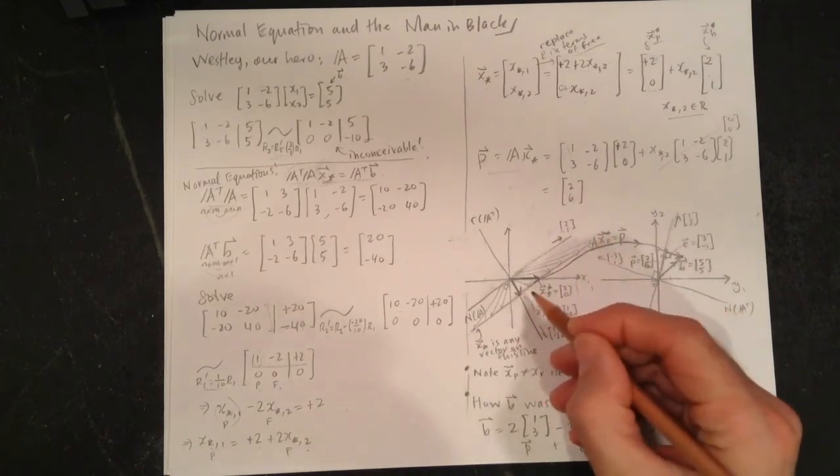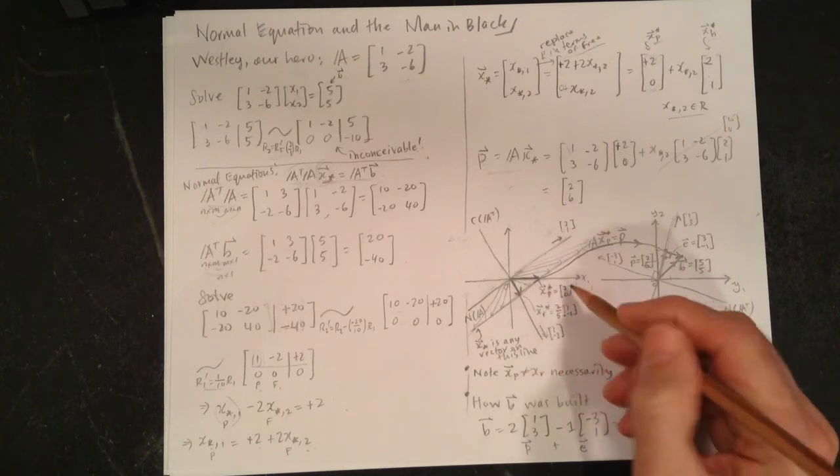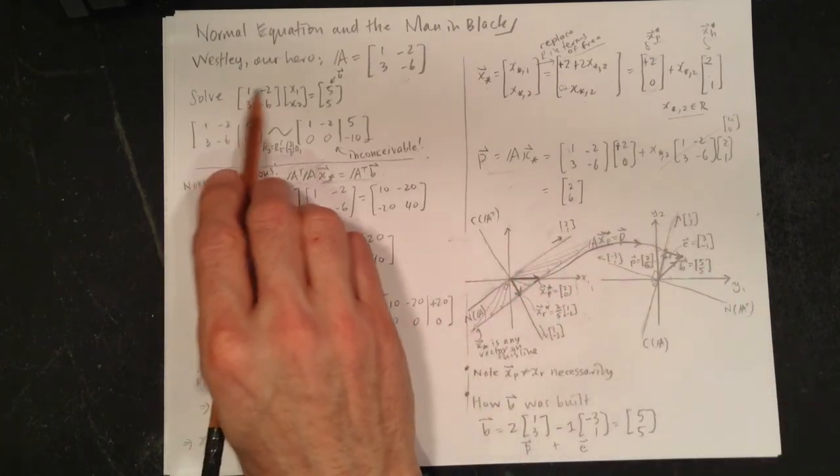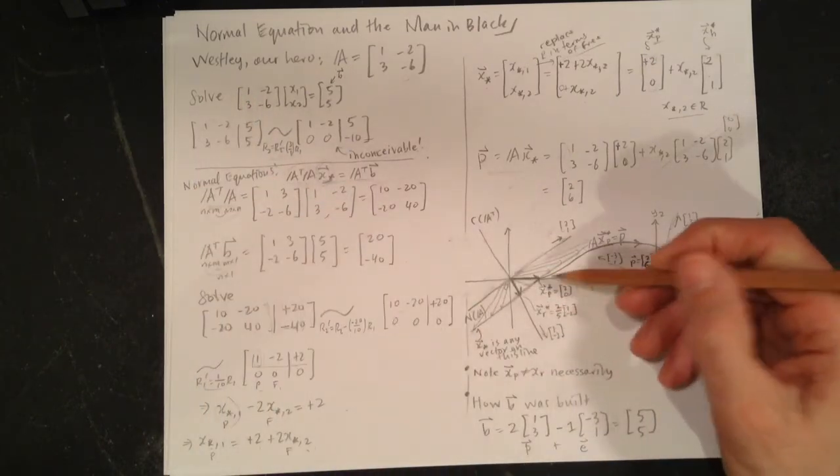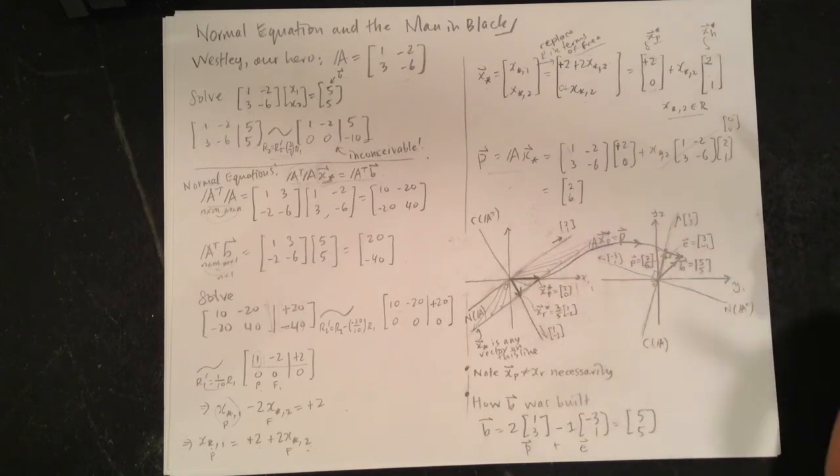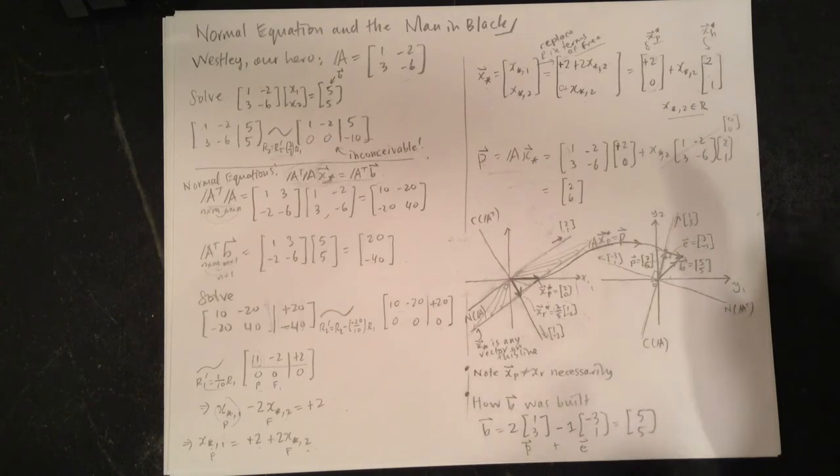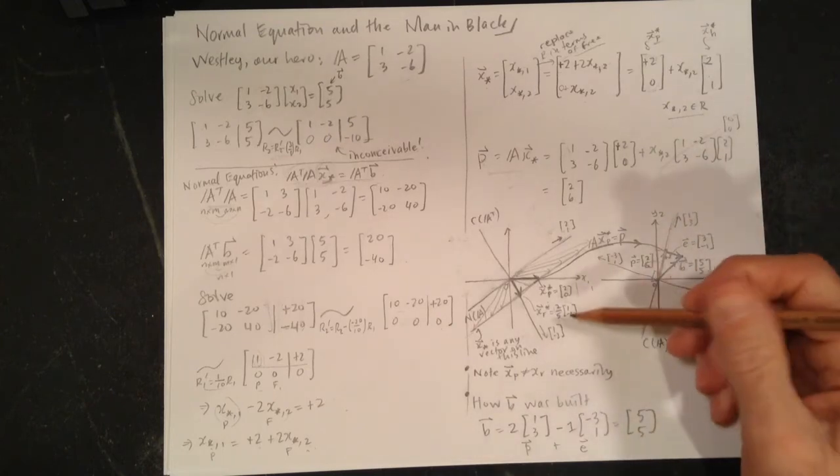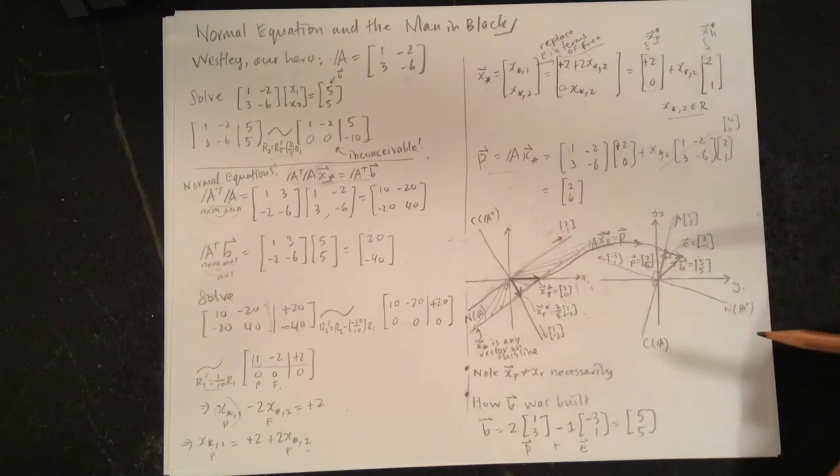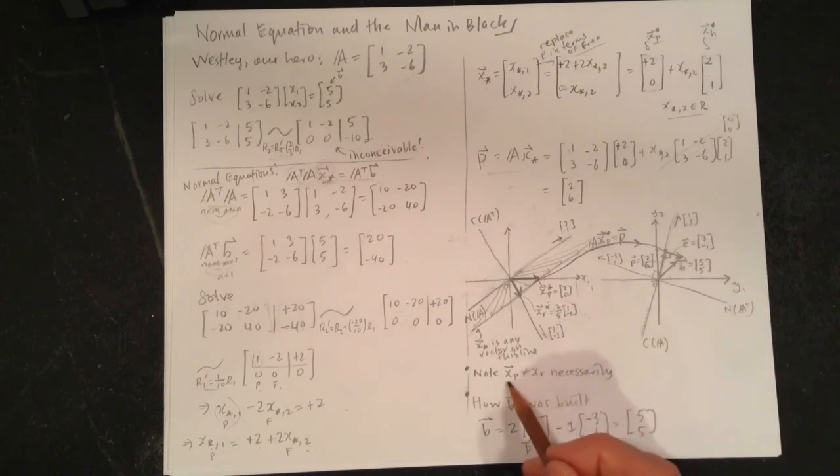The [2, 0] part gets sent to [2, 6] and all of this other stuff gets sent to zero. Now there is one of these points—one of these vectors—that's actually in row space. It's (2/5)[1, -2]. It has to be some multiple of [1, -2], and (2/5)[1, -2] does the job. So we could say that's our better solution. It's in row space, everything else is in null space, because we know things in row space have to go to column space.